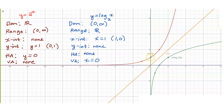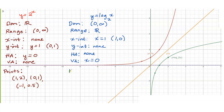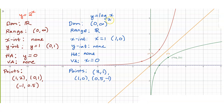Let us look at the points. For the red graph, the three points we considered are (1, 2), (0, 1), and (-1, 0.5). For the green graph, they became (2, 1), (1, 0), and (0.5, -1). These are the properties of y equals 2 to the x and y equals logarithm of x to the base 2.